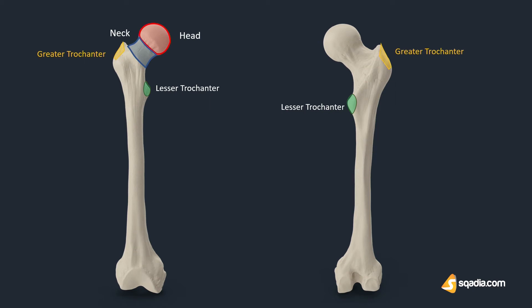Besides having the four areas of the proximal femur, there are also two bony ridges connecting the two trochanters. The intertrochanteric line is a ridge of bone running in an inferior medial direction on the anterior surface of the femur, extending between the two trochanters. It is also known as the pectineal line after it passes the lesser trochanter on the posterior surface, to which the pectineus muscle attaches.